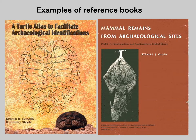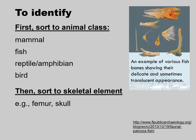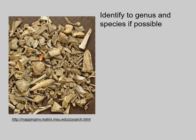Here are some examples of reference books. To identify, first you would sort the bones to the animal class: is the bone a mammal bone, fish bone, reptile or amphibian, or bird bone? Each are distinct enough that you can usually do this kind of sort. Then you would try to sort to skeletal element — for example, is it a mammal femur? Is it a fish skull? And when you can, you identify to genus, and if possible to species.